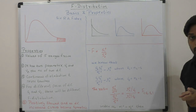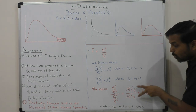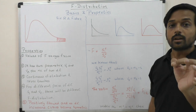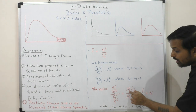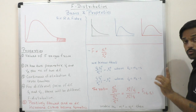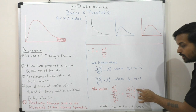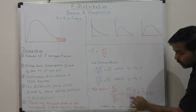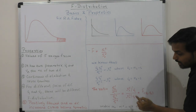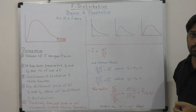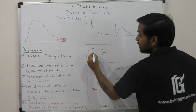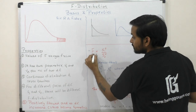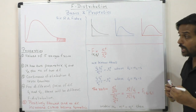The F distribution is the ratio of two independent chi-square distributions. Specifically, it is chi-square 1 divided by its degree of freedom ν1, over chi-square 2 divided by its degree of freedom ν2. This is the F test formula with ν1 and ν2 degrees of freedom.